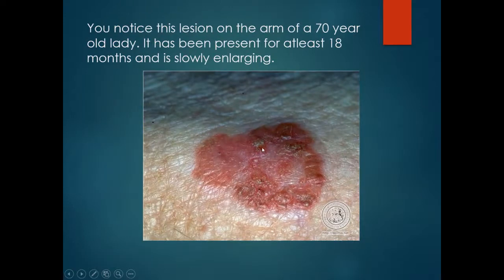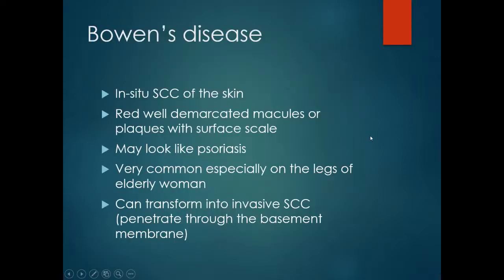You notice this lesion on the arm of a 70 year old lady. It has been present for at least 18 months and is slowly enlarging. This is an erythematous macular, almost plaque-like lesion with some surface keratosis. This is Bowen's disease, or in situ SCC.